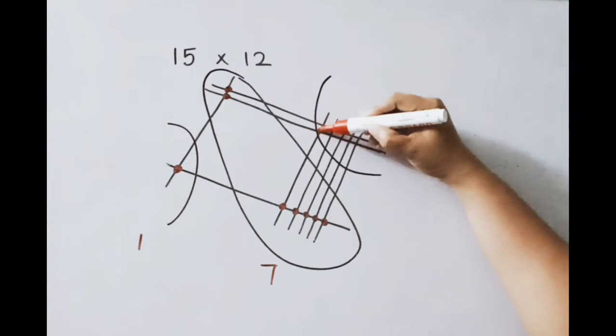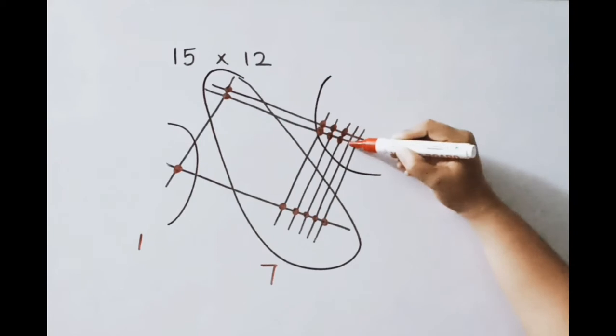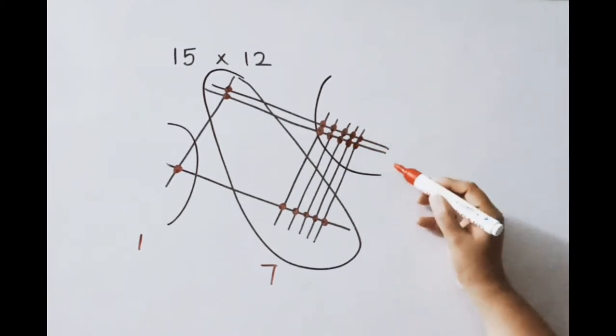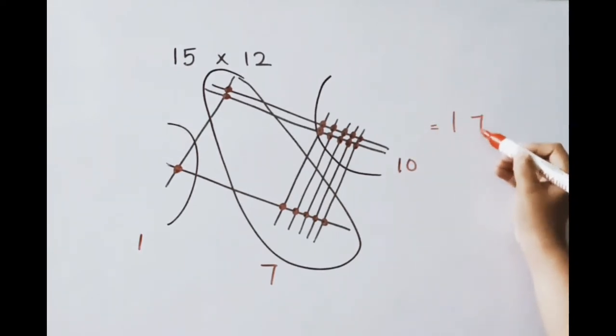Count here 1, 2, 3, 4, 5, 6, 7, 8, 9, 10. So here we got 10. So write on 1, 7, 2 raise it 10. So write 0 carry 1.